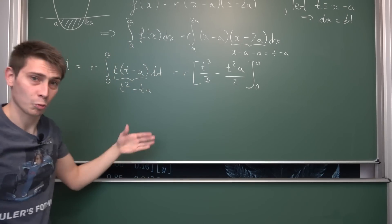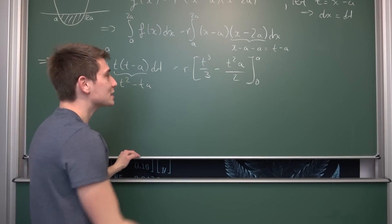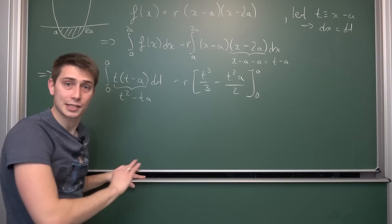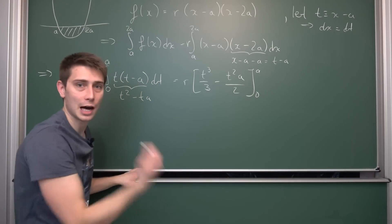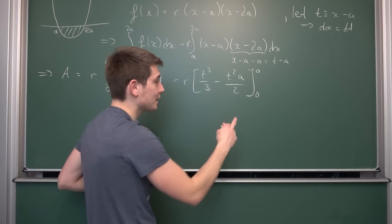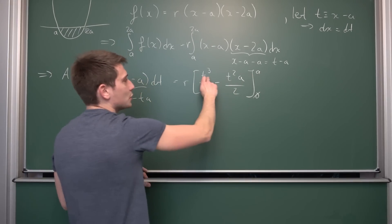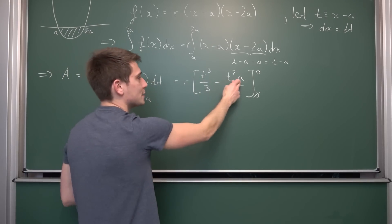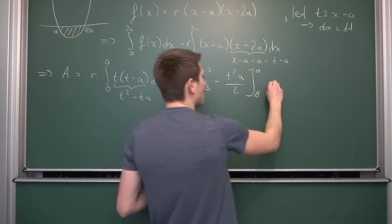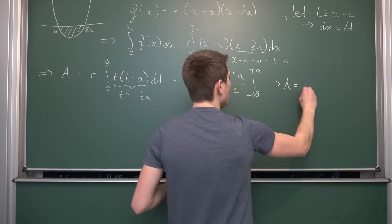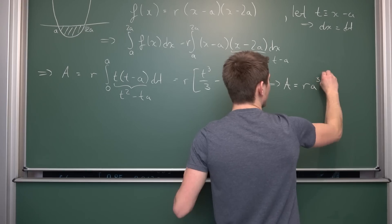Like mentioned before, one of the bounds is going to vanish very nicely, because all of those are dependent on t strictly, meaning we don't have a constant term. At 0 everything is going to vanish. If we plug a into here, this gives us a to the third power. a squared times a is also a to the third power, leaving us with an area of r times a to the third power.